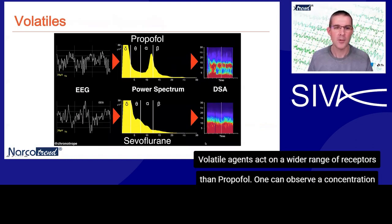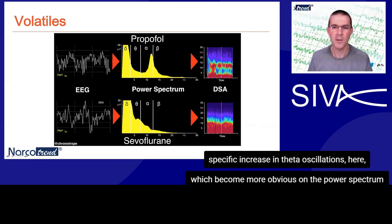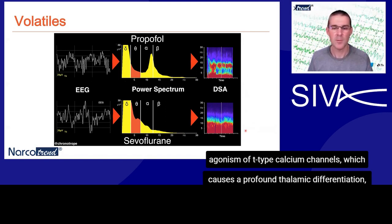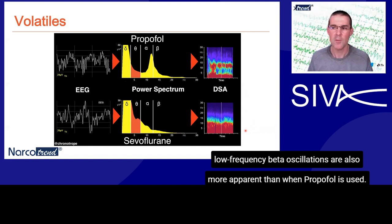Volatile agents act on a wider range of receptors than propofol. One can observe a concentration-specific increase in theta oscillations, which become more obvious on the power spectrum and density spectral array above one MAC. This is currently felt to represent a dose-dependent antagonism of T-type calcium channels, which causes a profound thalamic deafferentiation. Low-frequency beta oscillations are also more apparent than when propofol is used.